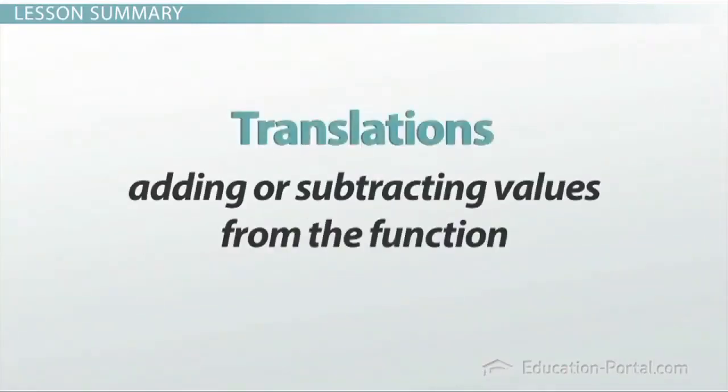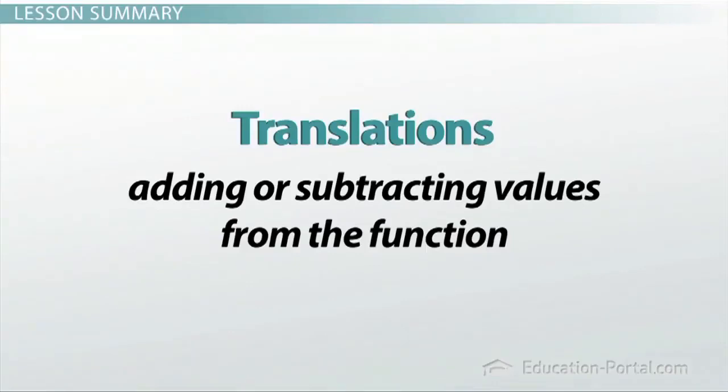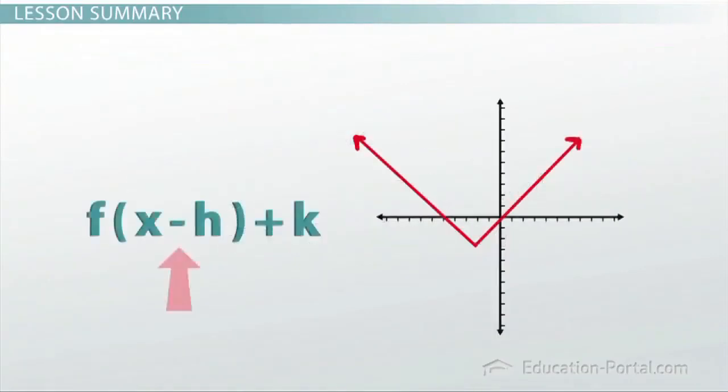To perform a function translation, you must add or subtract values to either the inside or the outside of the f of x. Values on the inside will shift the graph in the x direction, left or right, while values on the outside will shift in the y direction, up or down.